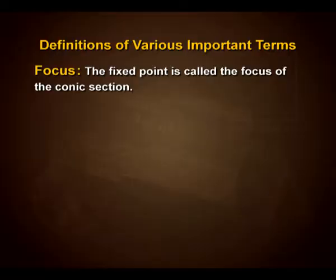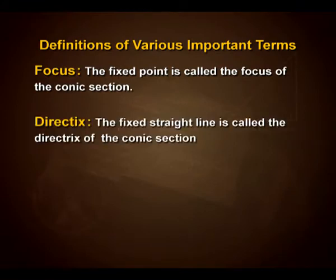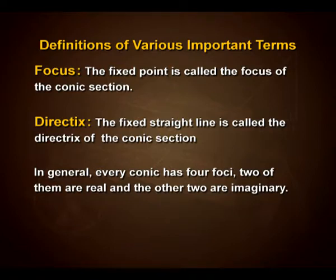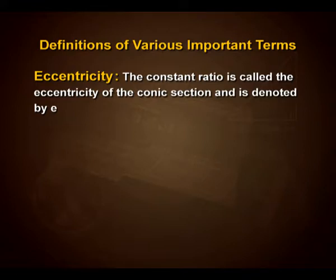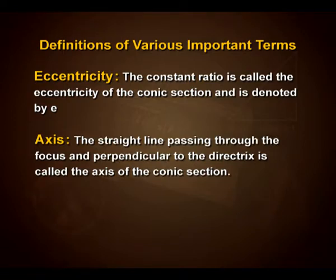Let us look into the definitions of various important terms. Focus: the fixed point is called the focus of the conic section. Directrix: the fixed straight line is called the directrix of the conic section. In general, every conic has four foci — two of them are real and the other two are imaginary. Due to two real foci, every conic section has two directrices corresponding to each real focus. Eccentricity: the constant ratio is called the eccentricity of the conic section and is denoted by E. Axis: the straight line passing through the focus and perpendicular to the directrix is called the axis of the conic section.